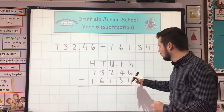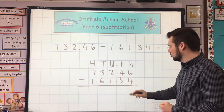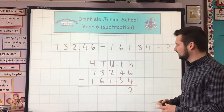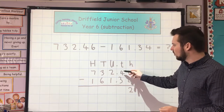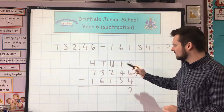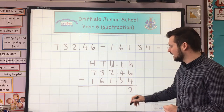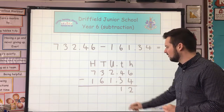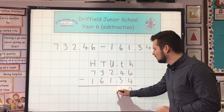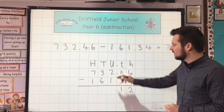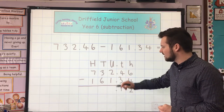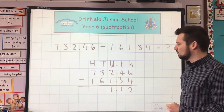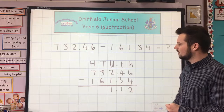Six hundredths take away four hundredths are two hundredths. Four-tenths take away three-tenths is one-tenth. Decimal place. Two units take away one unit is one unit.